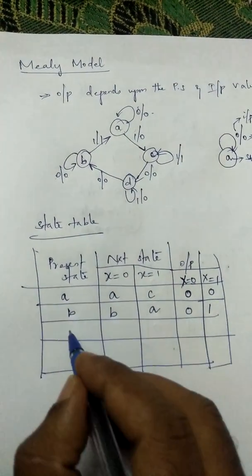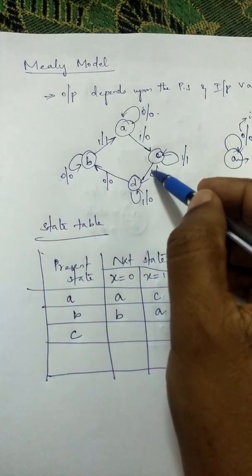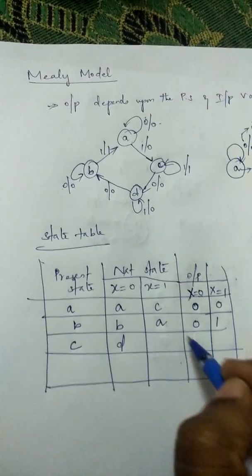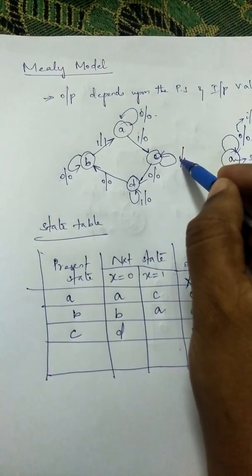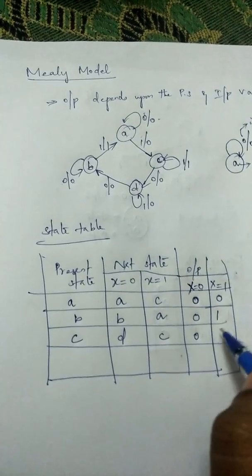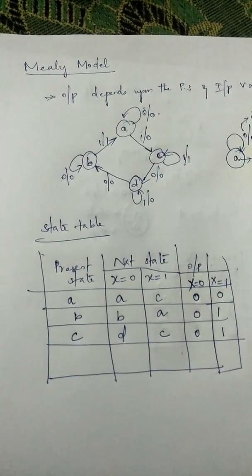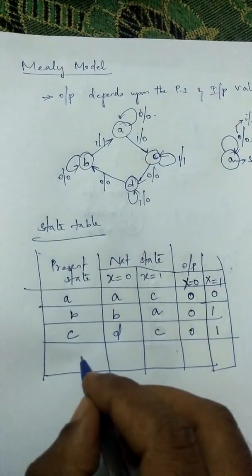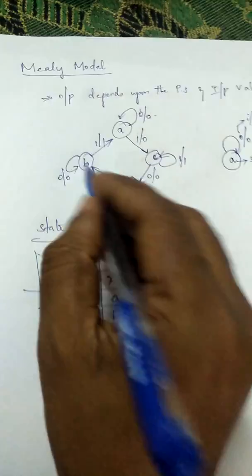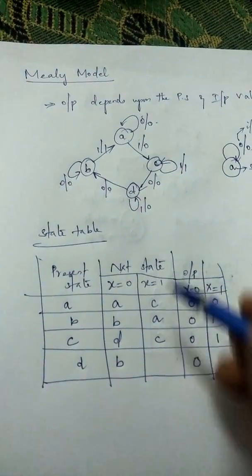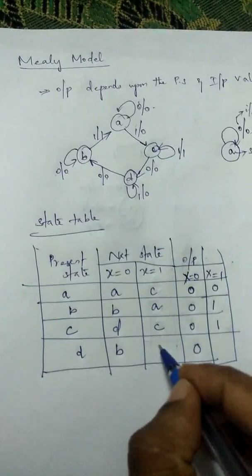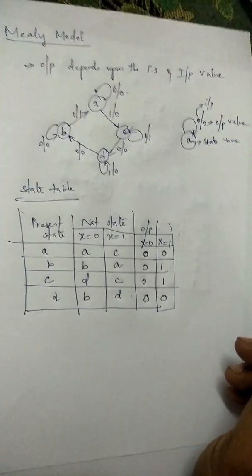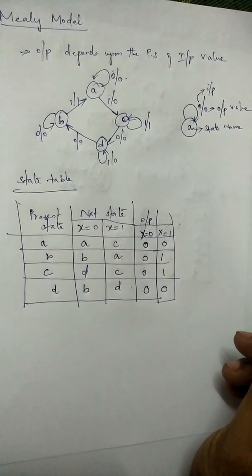For state C, when x equals zero, it goes to state D and the output is zero. When x equals one, it goes to the same state C and the output is one. For state D, when the input is zero, it goes to state B and the output is zero. When input is one, it goes to state D and the output is zero. This is all about the Mealy model. Thanks for watching.